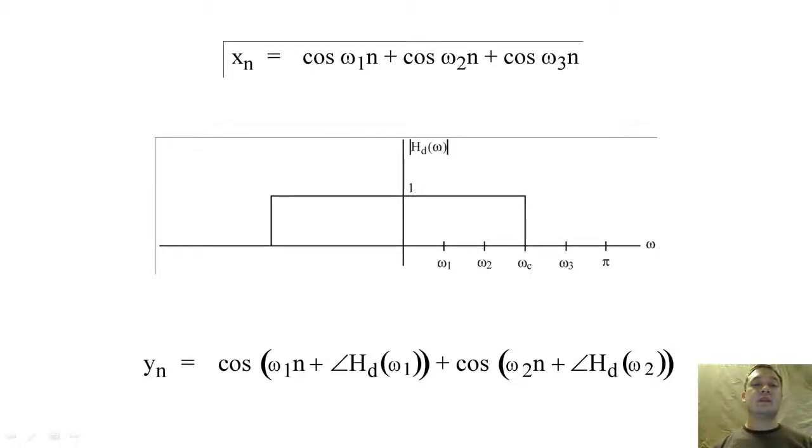Suppose we had an input that is the summation of three cosines. If we filtered this input with an ideal low-pass filter with magnitude one, then the magnitude of the two lower frequency cosines would remain the same.